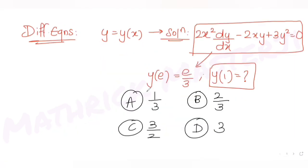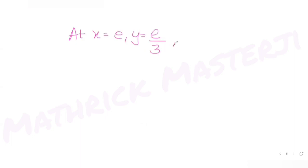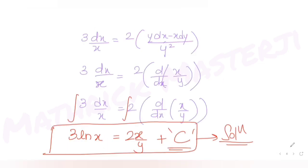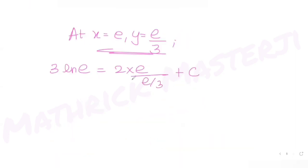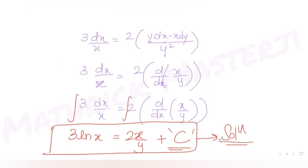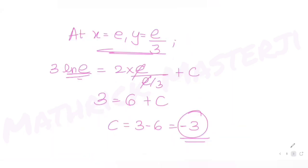Now applying the initial condition: at x equals e, y equals e/3. Substituting into the solution: 3 ln(e) equals 2·(e ÷ e/3) plus c. Since ln(e) equals 1, the left side is 3. The right side gives 2·3 equals 6. So 3 equals 6 plus c, giving c equals minus 3. The complete solution is: 3 ln(x) equals 2x/y minus 3.